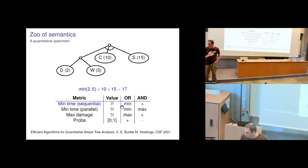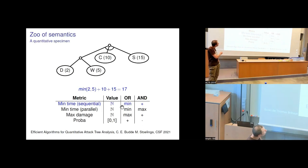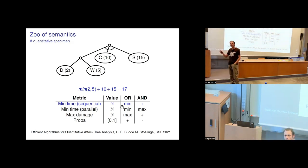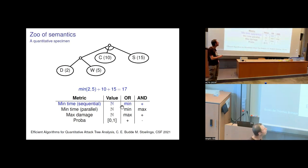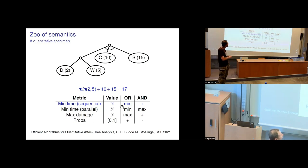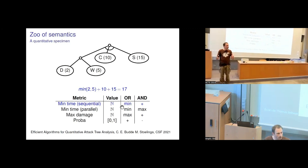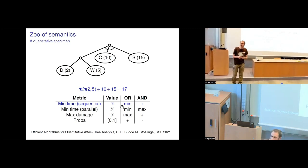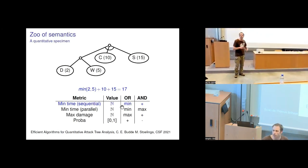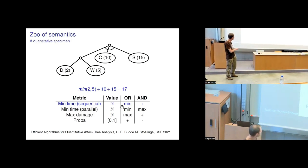For quantitative semantics — not the main topic — you associate numbers with each leaf, for example the estimated time for each action. You then interpret in some ring, and the different operators aggregate values. For instance, in minimum-time sequences, OR is the minimum and AND is addition. Questions include: given a quantitative attack tree, what is the shortest attack or the maximal damage? There is a very nice survey by the Buddha-installing guy from 2021 on that topic.